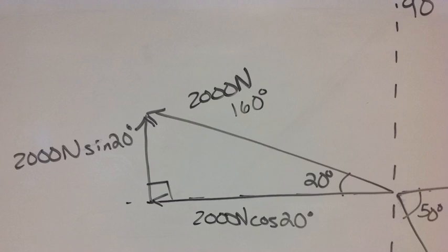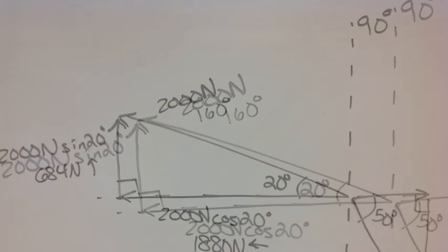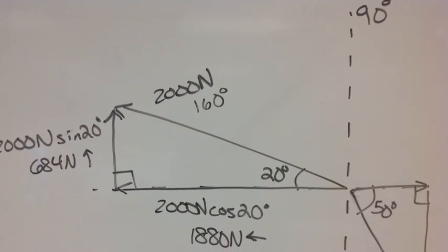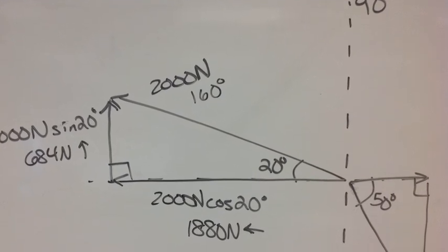Then we find the components by multiplying the hypotenuse by the cosine of that 20 degree angle for the x component, and the sine of the angle for the y component.